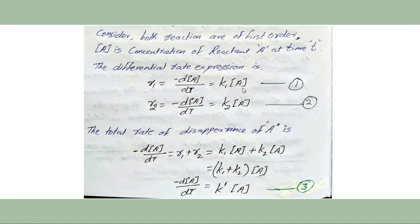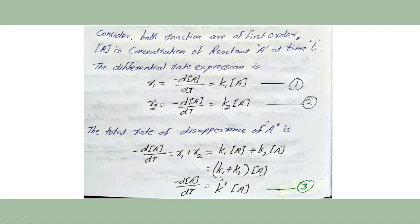The rate of the first reaction R1 converting A to B is: −d[A]/dt = K1[A] (equation 1). The rate of the second reaction R2 converting A to C is: −d[A]/dt = K2[A] (equation 2). The total rate of disappearance of A is the sum of both rates. Taking [A] as common, we get K1 + K2, and since both are constants, we call their sum K′, giving us equation 3.